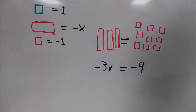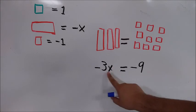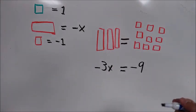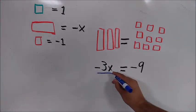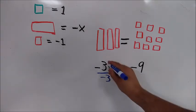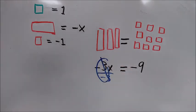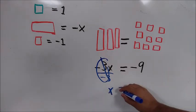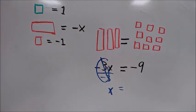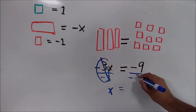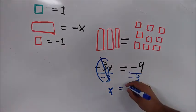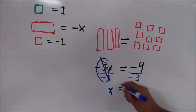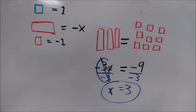Well, same as always, we would do the opposite operation that we see happening to the X. In this case, the X is being multiplied by a negative 3. So what we have to do, we have to divide by a negative 3. That leaves just the X. And what you do to one side, you have to do to the other. Negative 9 divided by negative 3 gives us 3. Easy as pi.